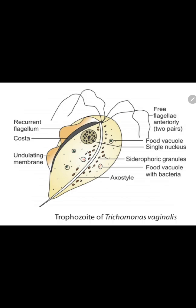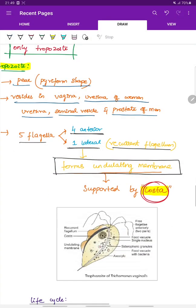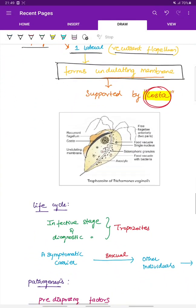It consists of a single nucleus. There are siderophilic granules and there is an axostyle. There are 4 pairs of flagella and then 1 flagella which forms the undulating membrane supported by the costa. And the trophozoid is spear shaped.